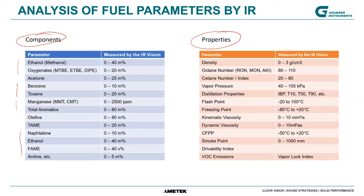Properties are not concentrations and not directly measured by infrared, but indirectly through correlation databases. With the exception of density, we have a built-in density meter. But octane number, cetane number, vapor pressure, distillation point, flashpoint, and even freezing point — those are all correlated properties which you can train into the instrument.